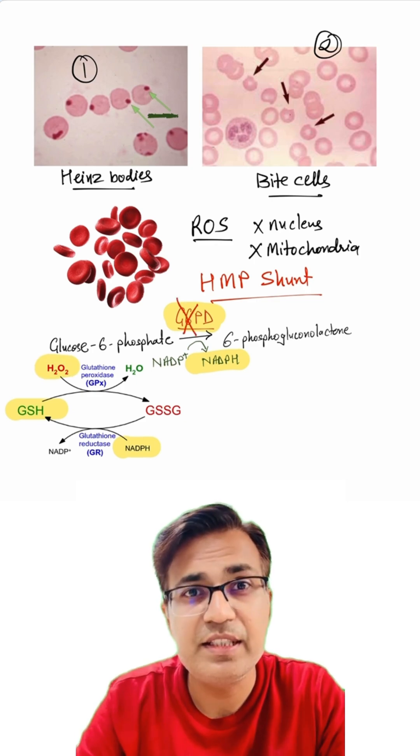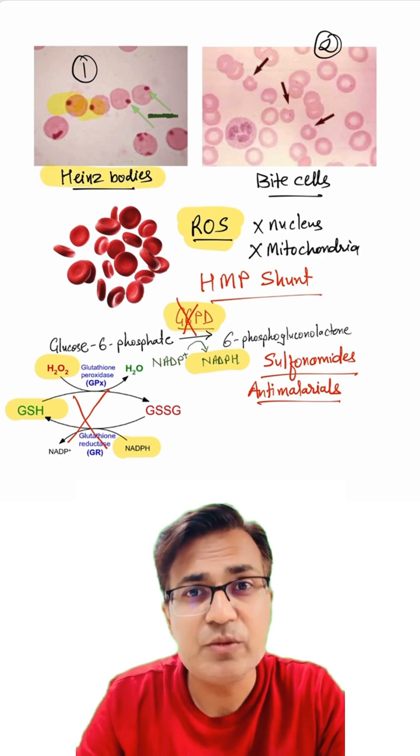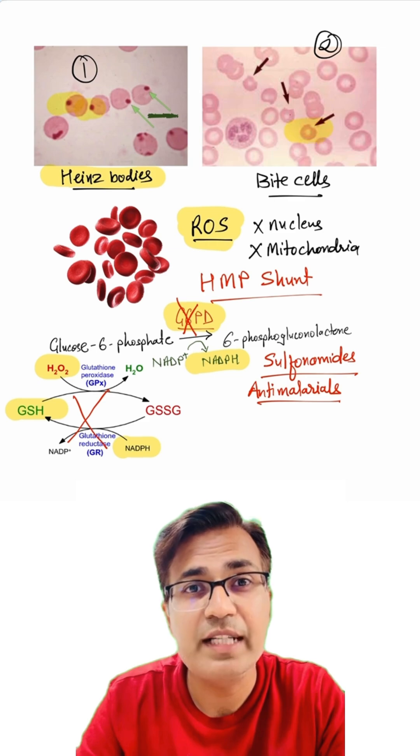In G6PD deficiency, this shield collapses. Triggers like sulfonamides or antimalarial drugs unleash oxidative stress. Damaged hemoglobin precipitates into Heinz bodies, seen as inclusions inside the RBCs. The spleen spots them and literally bites out the damaged part, creating the classic bite cells.